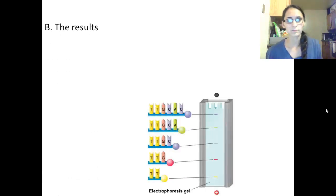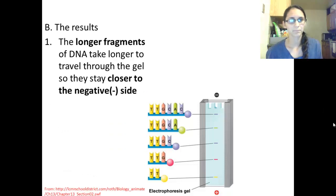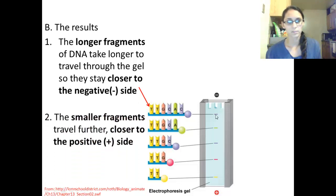The results. After you run your electrophoresis gel, the longer fragments of DNA will take longer to travel through the gel, so they stay closer to the negative side. Here's our wells that we placed our DNA in, and here would be longer samples, longer fragments of DNA. The smaller fragments travel further down the gel towards the positive side. Down at the bottom here we have smaller fragments of DNA.